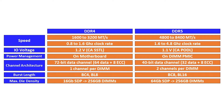The channel architecture for DDR4 is a 72-bit data channel of 64 data and 8 error correction with 1 channel per DIMM. DDR5's channel architecture is a 40-bit data channel of 32 data and 8 error correction with 2 channels per DIMM. The burst length for DDR4 is 4 and 8, where the burst length for DDR5 is 8 and 16. The maximum die density for DDR4 is 16 gigabytes SDP to 256 gigabytes DIMM, and for DDR5 it is 64 gigabytes SDP to 256 gigabyte DIMMs.